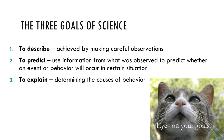So number one, we just want to describe what's happening. Number two, we like to use that information to try to predict future events. And number three, we also like to try to explain why people exhibit certain behaviors.